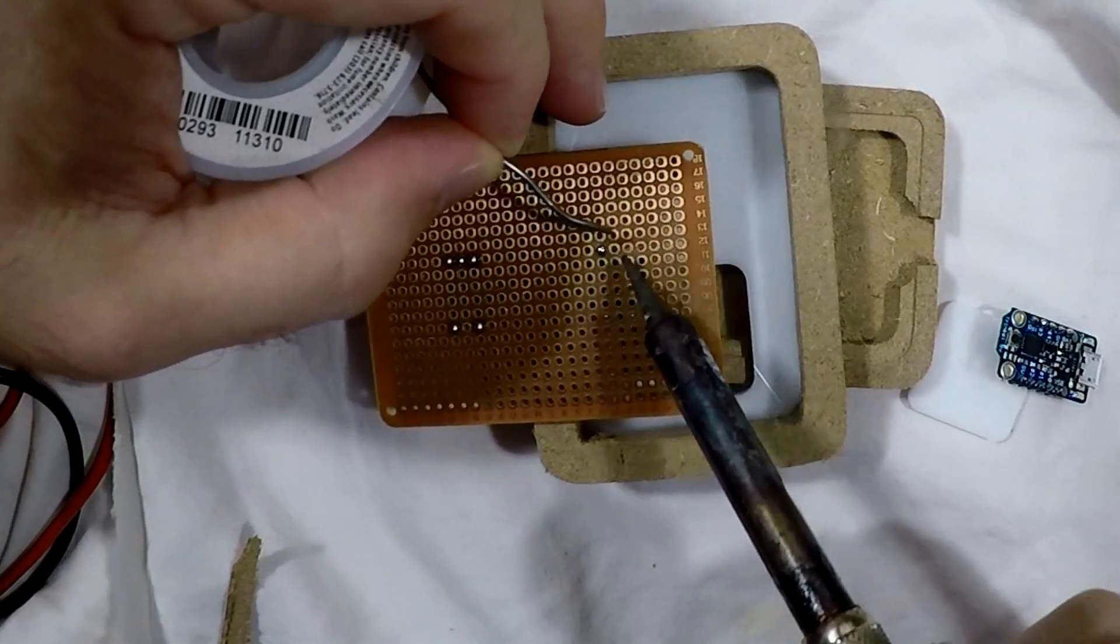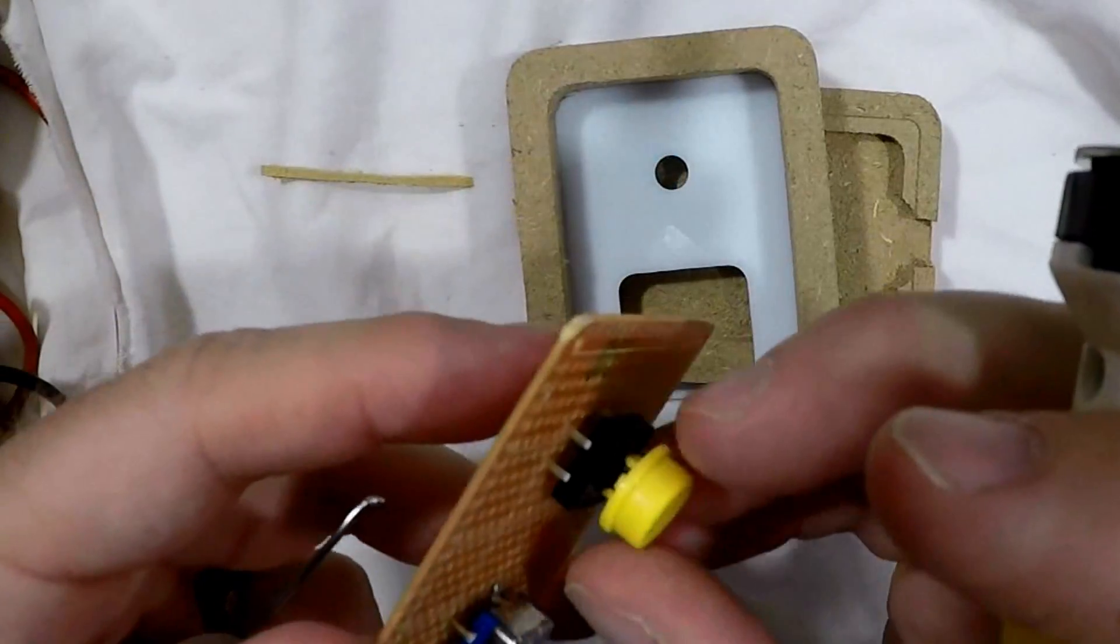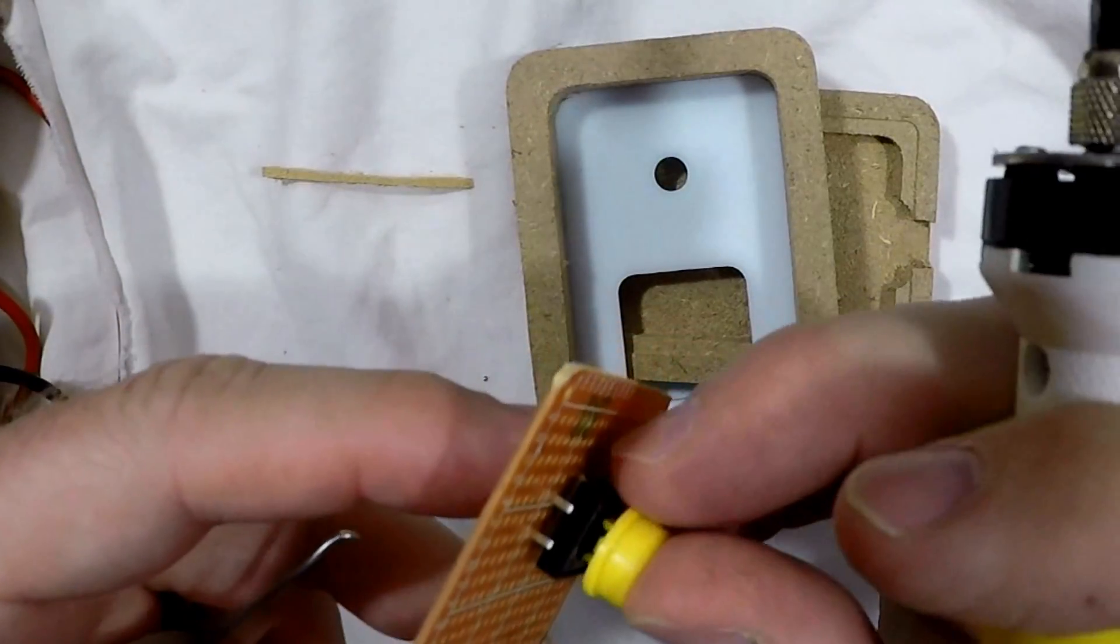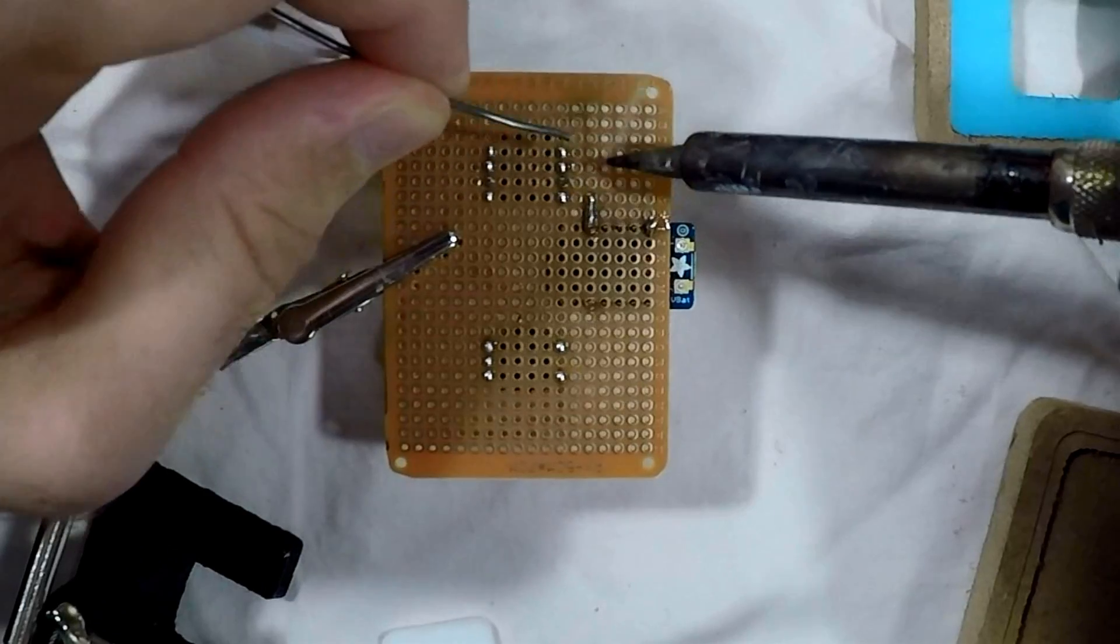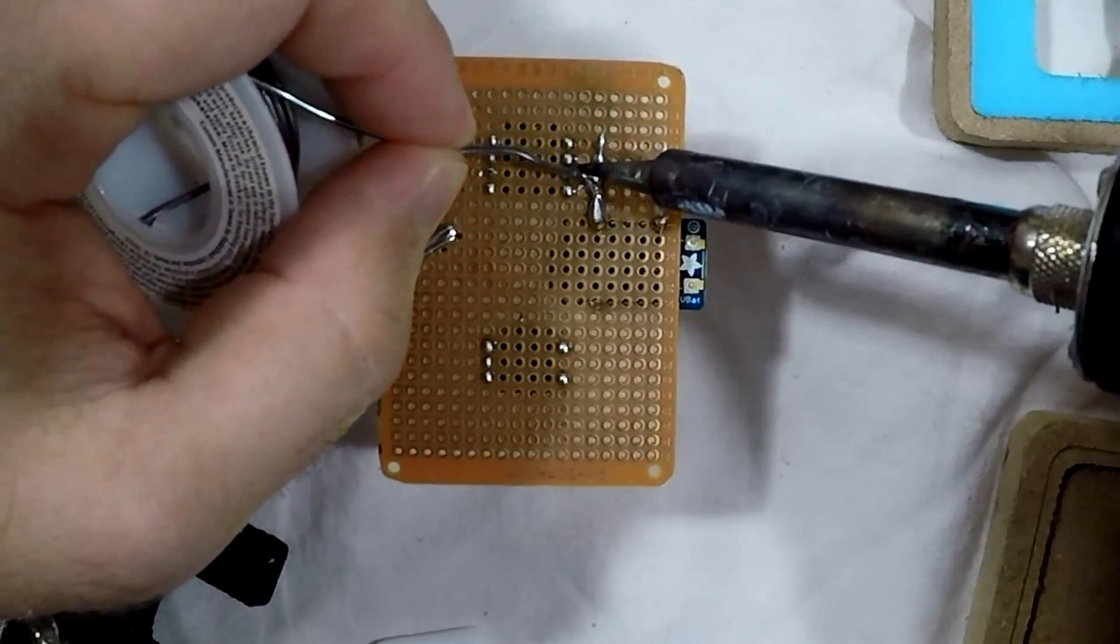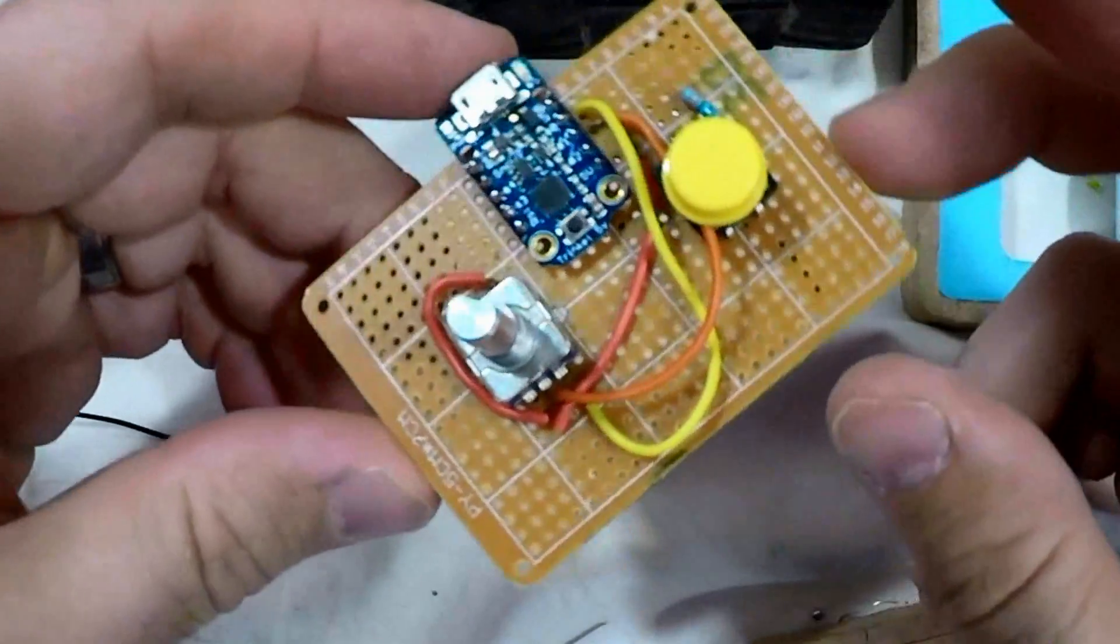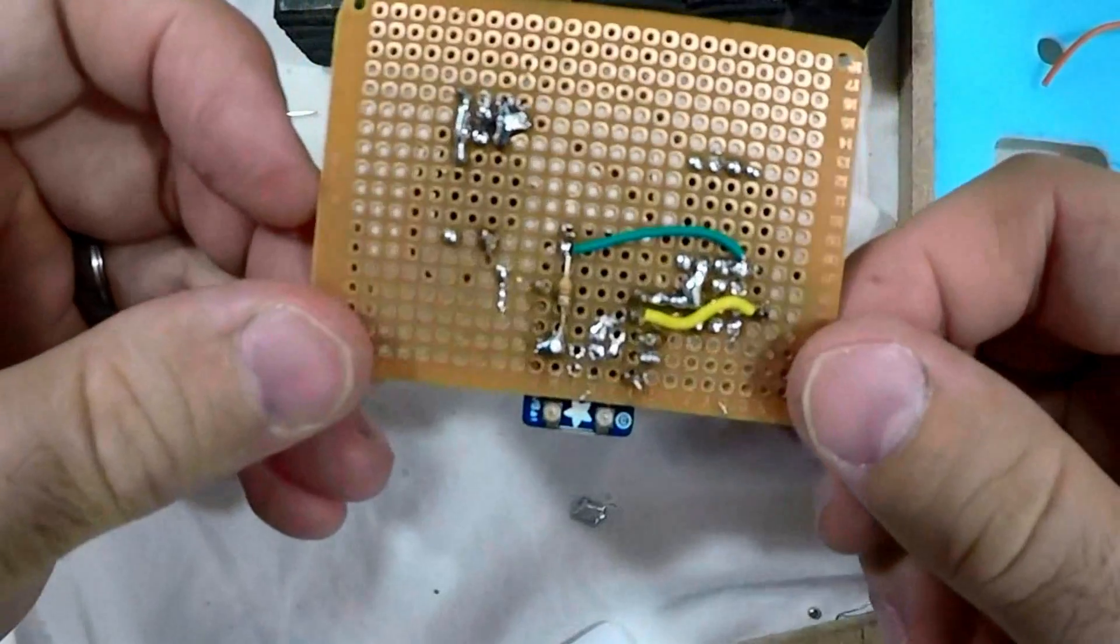I then proceeded to make the world's worst soldered breadboard. If you want to know how to do this properly, there are plenty of good tutorials out there. Just do a search, or I'll even link one in the description. It's not the cleanest build, but you can at least see where the encoder, button, and Trinket go.